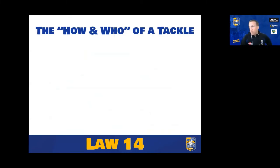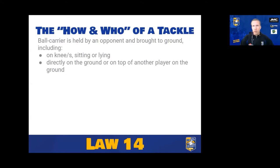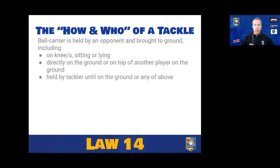The how and who of a tackle: the ball carrier is brought to ground, meaning either on one or both knees, sitting, or lying — either directly on the ground or on top of another player who is on the ground. They have to be held by the tackler until they've met those conditions. If they're not held all the way down to the ground or to another player, then they're not considered to be tackled, and none of what follows applies.